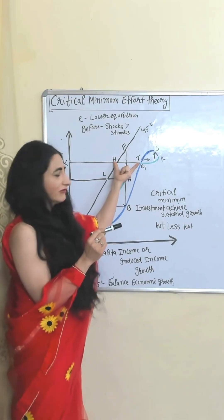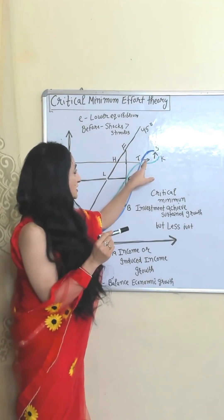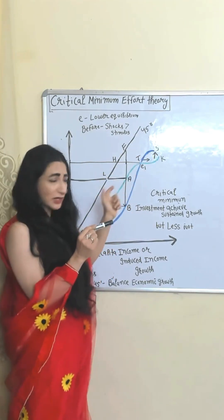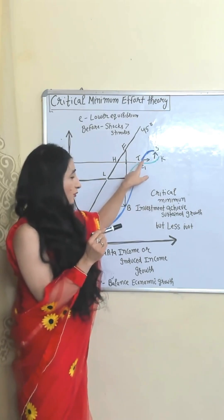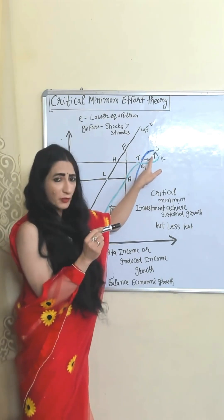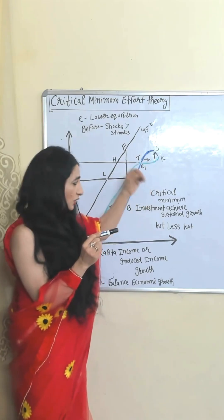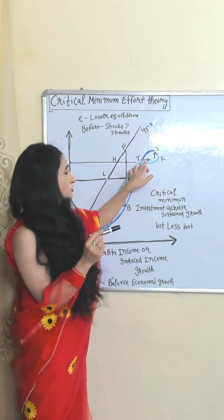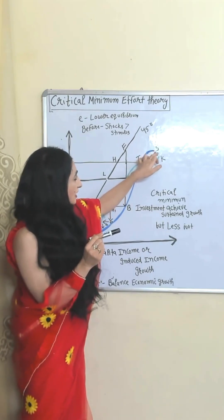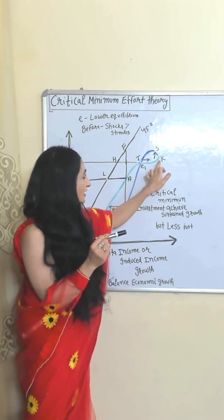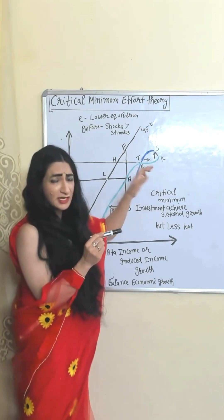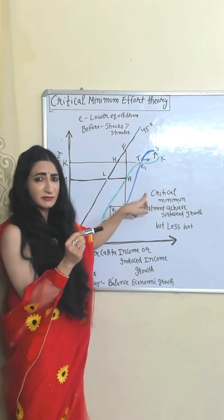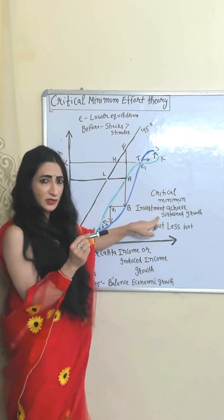Now suppose we do investment which is equal to the critical minimum level. As a result, our income increases up to the HT level. After point T, you can see our economy moving forward and not coming backward, because our investment is equal to the critical minimum level. After point T, the shocks are reducing but stimulants are increasing. So we can say that investment equal to the critical minimum level achieves sustained growth.